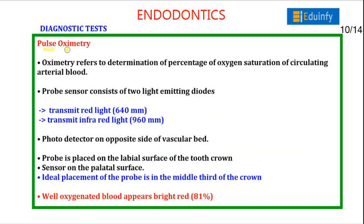Pulse oximetry determines the percentage of oxygen saturation of circulating arterial blood. The probe sensor consists of two light-emitting diodes: one red light in the range of 640 nm and one infrared light at 970 nm; a photodetector is placed on the opposite side of the vascular bed. In pulse oximetry, the probe is placed on the labial surface of the tooth crown, ideally in the middle third of the crown, and the sensor is placed on the palatal surface. Well-oxygenated blood appears bright red.